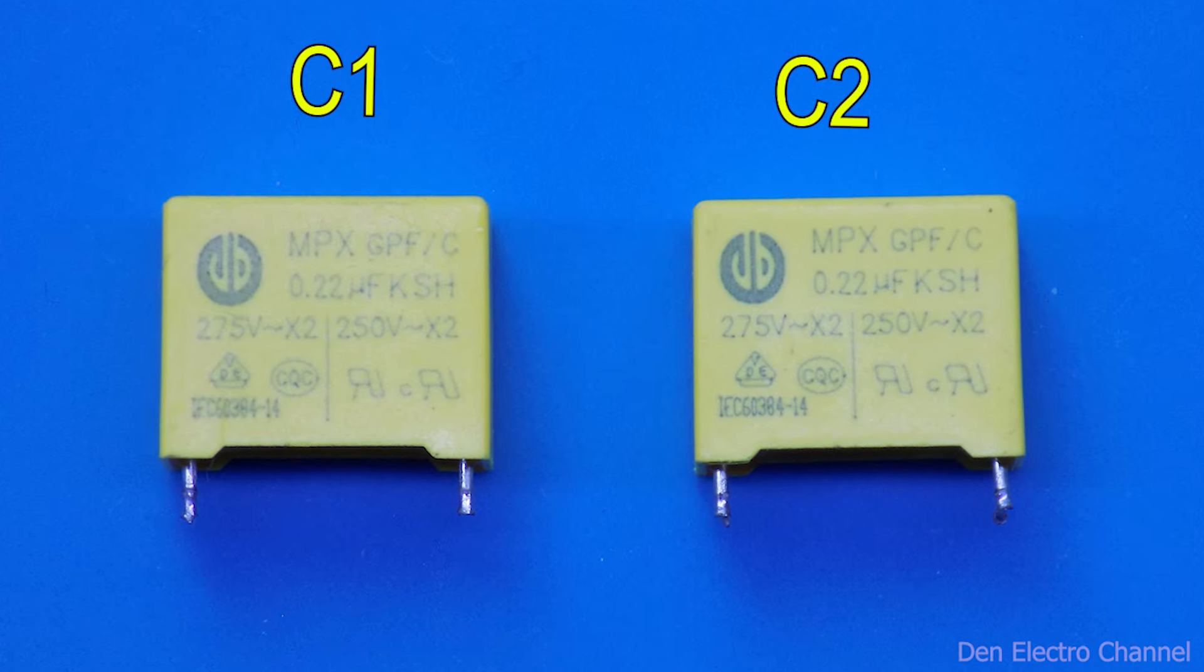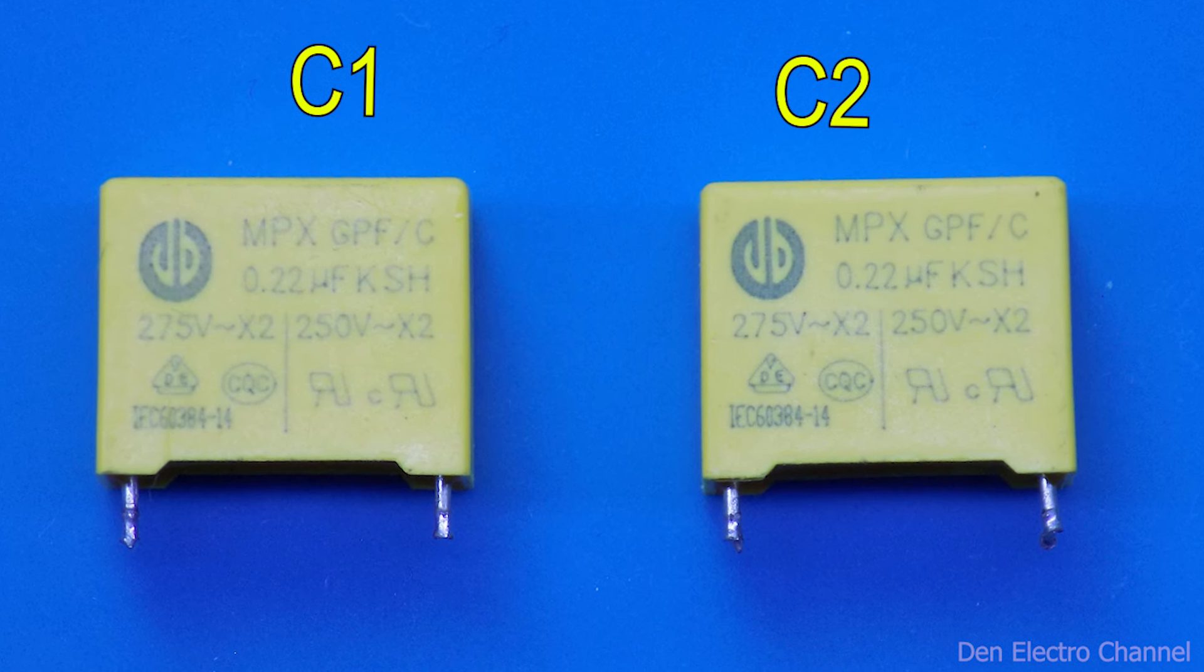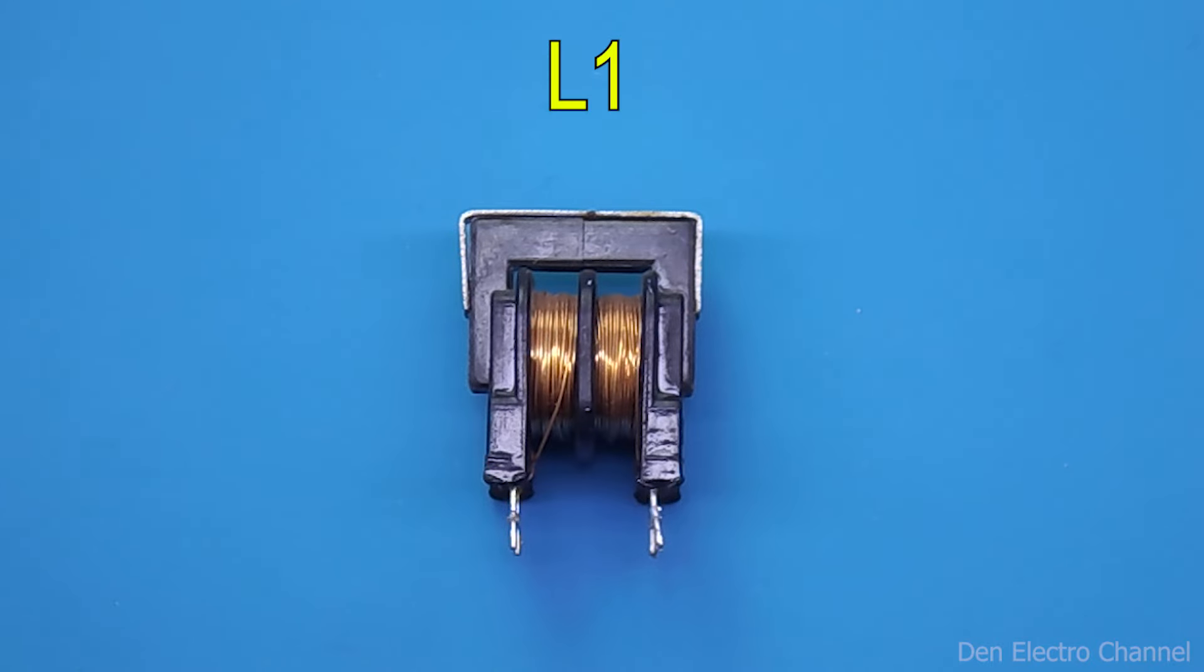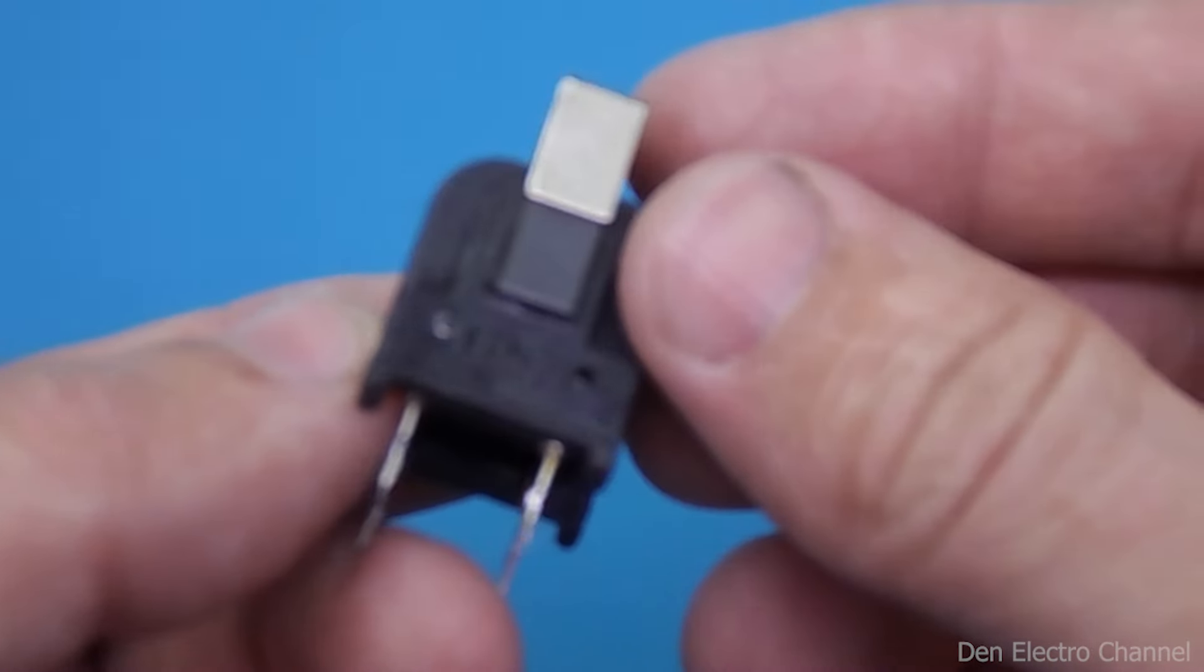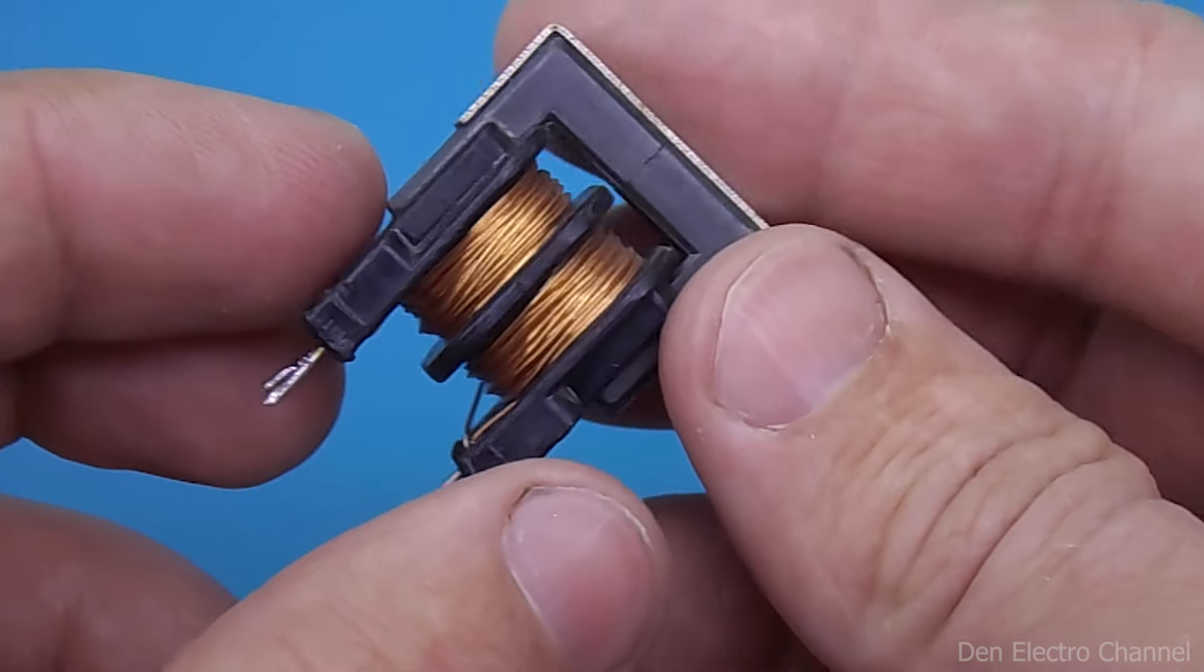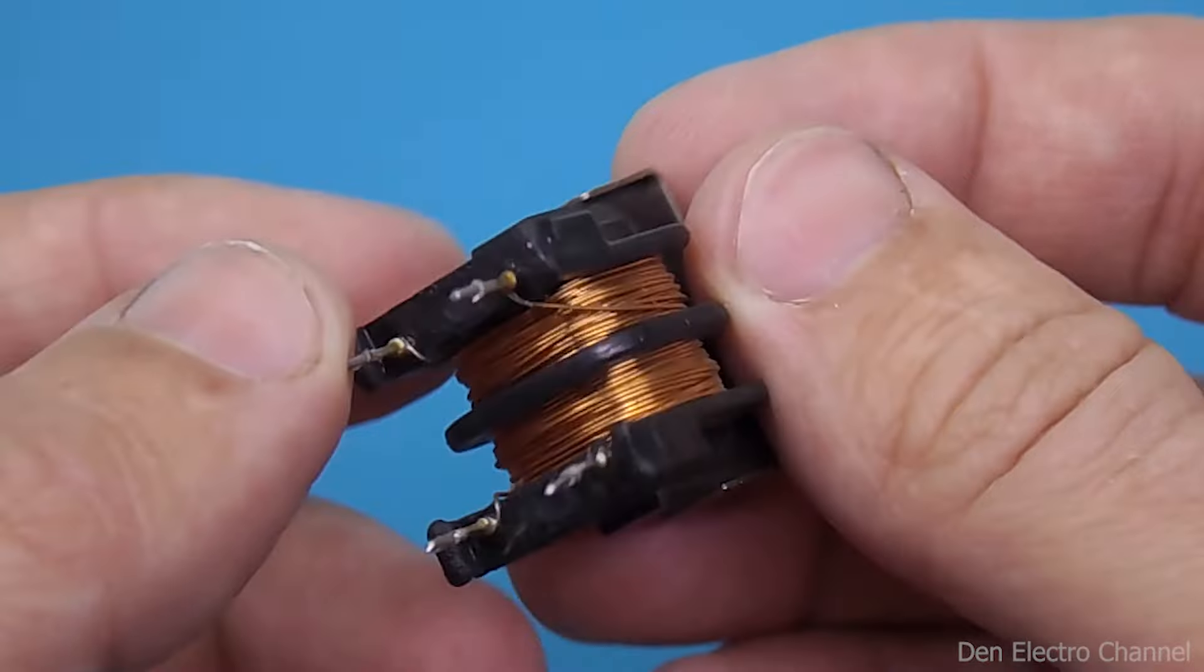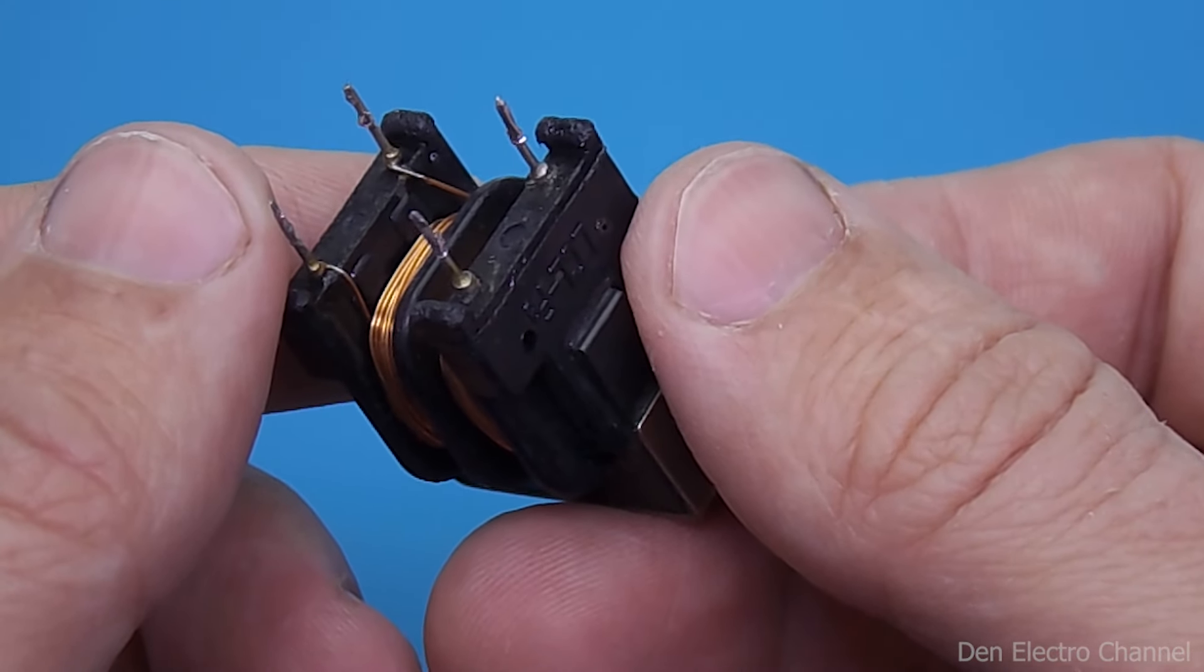This power supply is very noisy, so that this high frequency interference does not enter the network, there are two X-type capacitors at the input. A common mode choke is installed between the capacitors, and together they form a noise suppression filter that prevents electromagnetic interference from entering the power supply into the network and vice versa from the network into the power supply. Alternating current 220 volts passes through it freely and the high frequency current is attenuated.